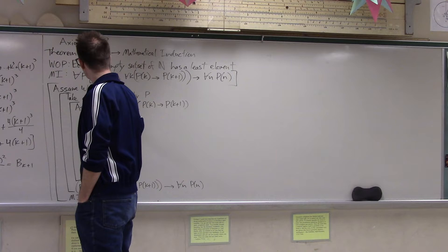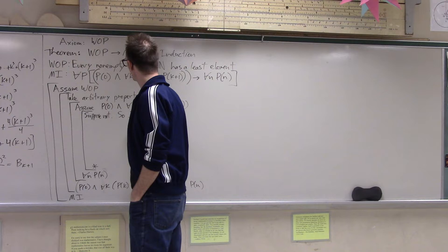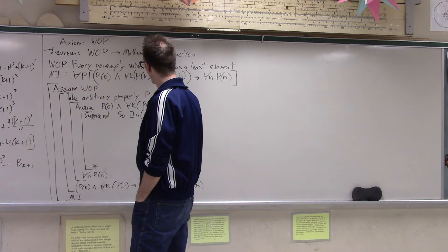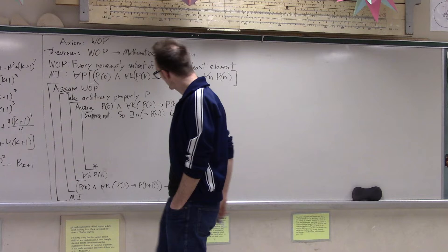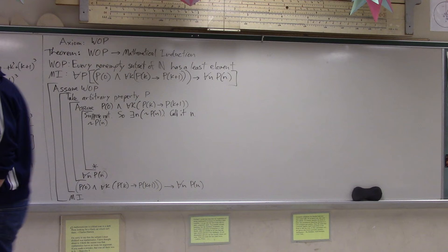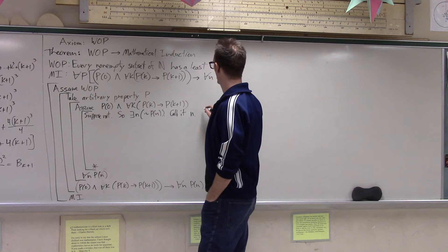If it's not true that all numbers have the property, then it means there's some number that doesn't. So there exists some number n for which it's just not true that that property holds. Let's call it n. So it's just not true that n has this property.